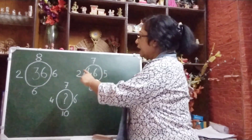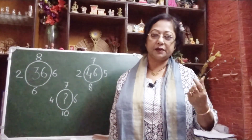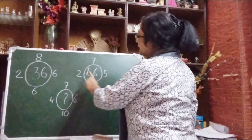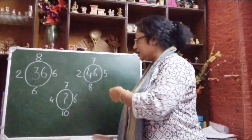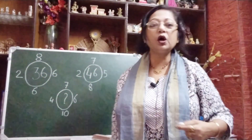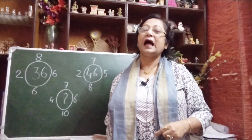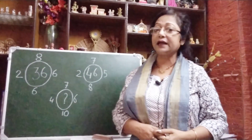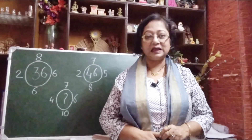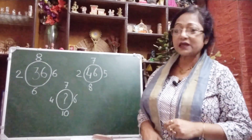Here is the puzzle — you have to find the missing number. We can see that in the middle of these two circles, bigger numbers are written: one is 36 and one is 46. On the outer side of the circles, smaller numbers are there. We have to do some operations with these smaller numbers, and since the middle has a bigger number, we have to do some multiplication to find it.